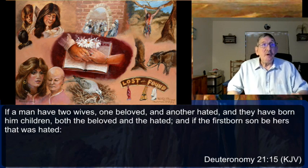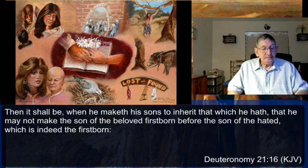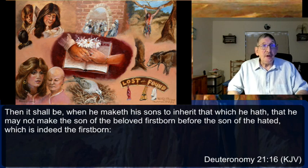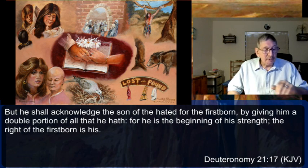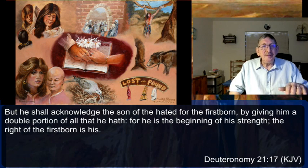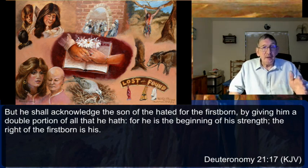'And they have born him children, both the beloved and the hated, and if the firstborn son be hers that was hated — then it shall be when he maketh his sons to inherit that he may not make the son of the beloved firstborn before the son of the hated which is indeed the firstborn. But he shall acknowledge the son of the hated for the firstborn by giving him a double portion of all that he hath, for he is the beginning of his strength; the right of the firstborn is his.' The firstborn son always gained a double portion.